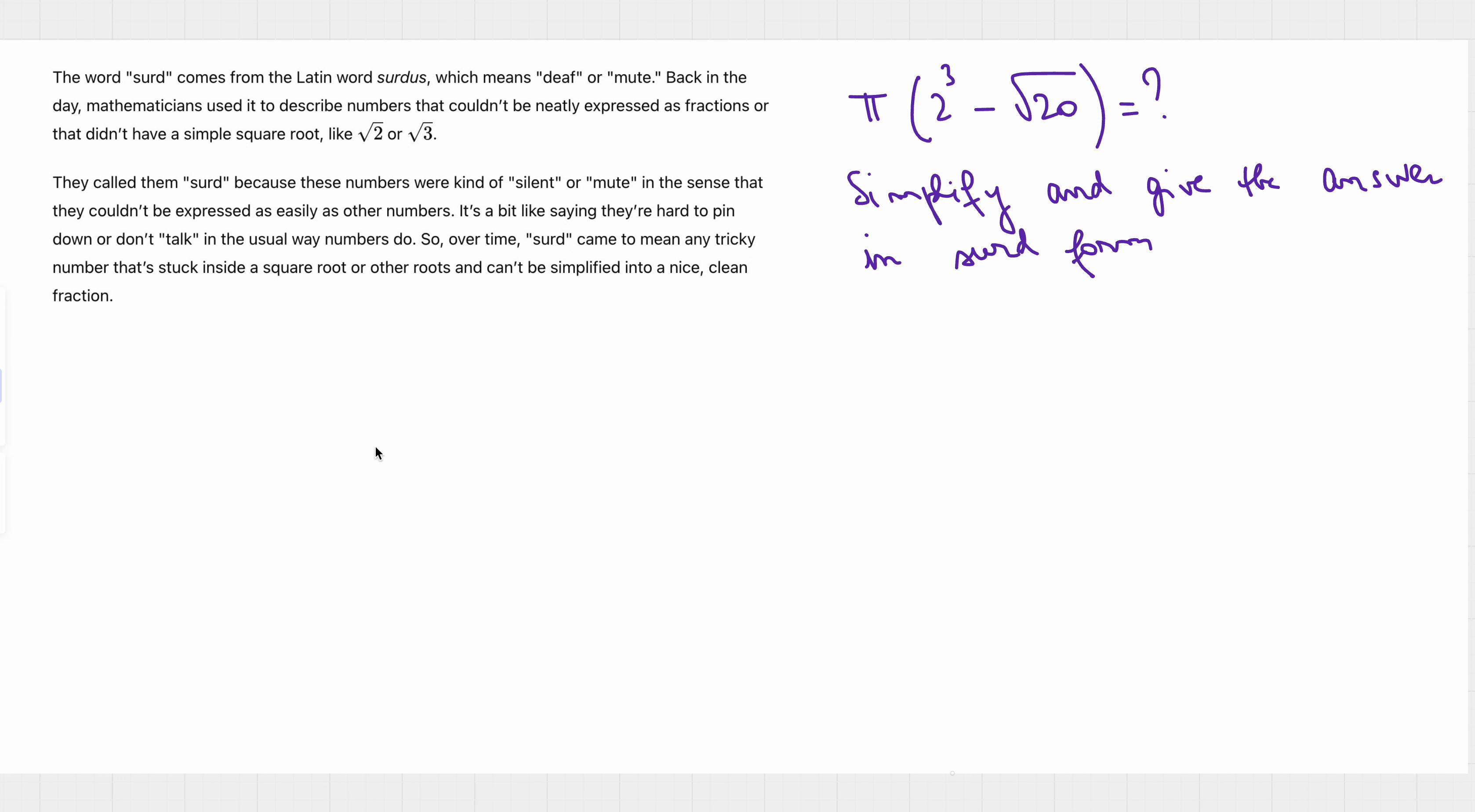Are you ready? What you should do first when you have a number multiplied with a parenthesis, you can multiply this number by each term in the parenthesis. So, we can have 2 to the power 3 pi times pi minus pi times square root of 20.